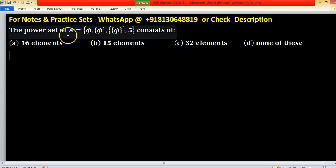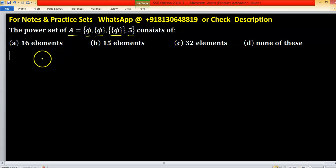In this given problem, we have a set A containing 4 elements: 1, 2, 3, 4. There are 4 elements and we have to find the power set of A consists of, means cardinality of power set of A.